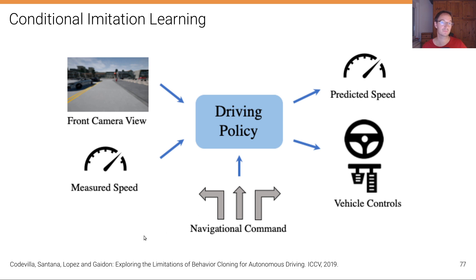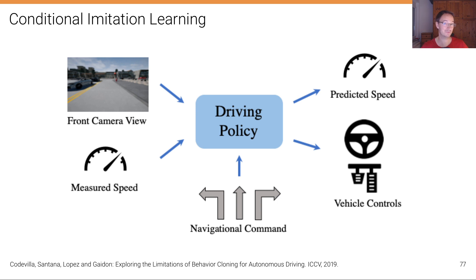CILRS addressed the causal confusion problem: in imitation learning for self-driving, the true cause of an action is often confused with the wrong cause. For example, when the vehicle is standing still and the traffic light turns green, the vehicle doesn't start because the correlation between standing still in the previous frame and standing still in the next is very high, so the vehicle keeps standing still. One mitigation is to additionally predict speed with the policy, which to some degree alleviates the causal confusion problem.